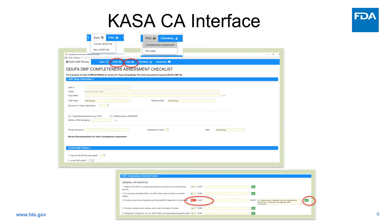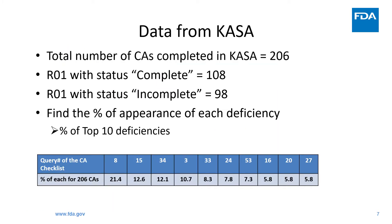Next, I would like to show you an example of the function. This slide shows that from the launch of the CASA CA interface in March of 2020 to November of 2020, 206 DMFs have been reviewed per CA guidance requirements. 98 of the reviewed DMFs were found incomplete. Through CASA query, we summarized the top 10 deficiencies.